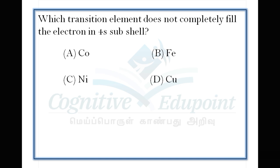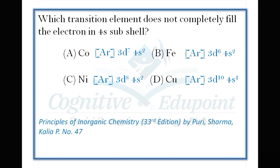Next question: Which transition element does not completely fill the electron in 4s subshell? First transition series includes cobalt, iron, nickel, and copper. Copper has the most stable configuration as 3d10 4s1, so it does not completely fill the electron in 4s subshell. Correct answer is D, copper.